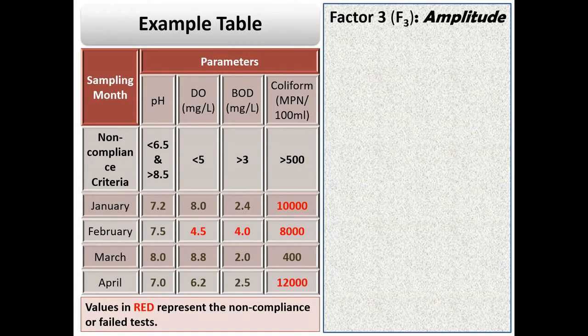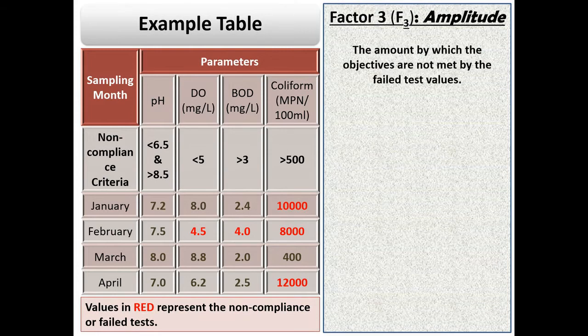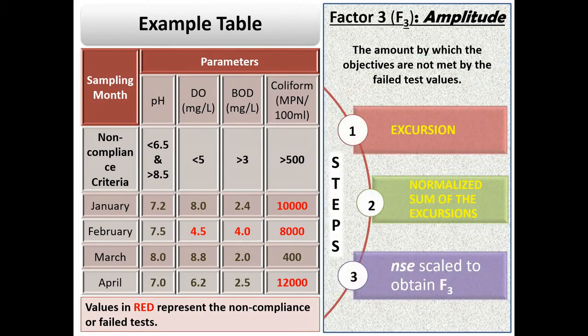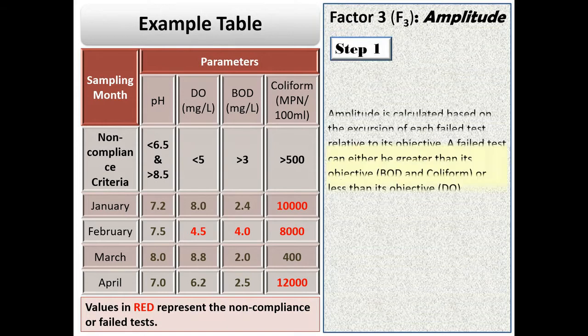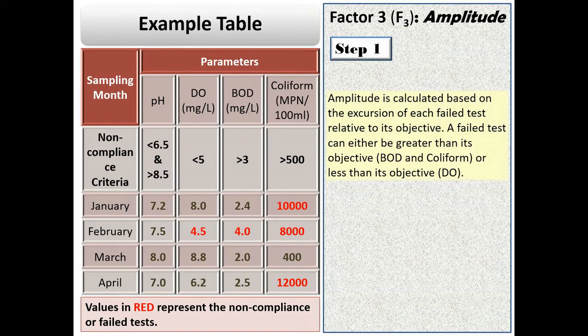The third factor or the amplitude is the amount by which the standards, i.e. the objectives, are not met by the failed test values. It can be calculated in three steps, the first step being the calculation of the excursion. Let's see how it is done.